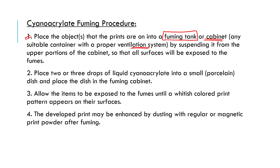Suspend the object from the upper portion of the cabinet so that all surfaces are exposed to the fumes, which enter from the upper portion. The second step is to place two or three drops of liquid cyanoacrylate into a small porcelain dish, then place that dish into the fuming cabinet.